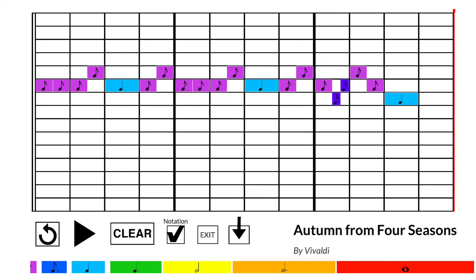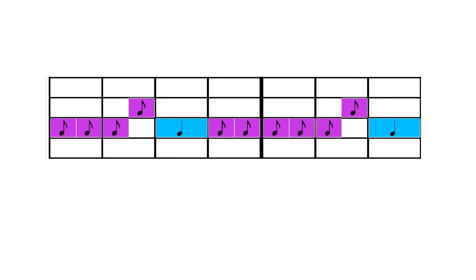So here is Vivaldi's opening melody from Autumn. Notice how we have different rhythmic durations. Some shorter rhythmic durations and some longer durations. Let's zoom into the first series of notes. Do you see a pattern?